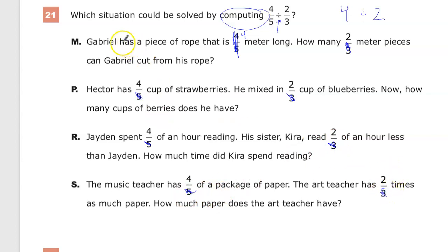So answer choice number 1. Gabriel has a piece of rope that is 4 meters long. How many 2 meter pieces can he cut? So he has, this is 4, and they want to know, well how many 2's can he cut? Well that and that. See how he's cutting it into equal sized pieces? That's exactly 100% division. So there it is. Let's look at the other answer choices anyway.